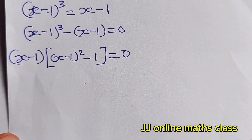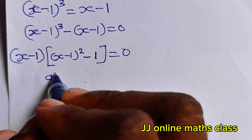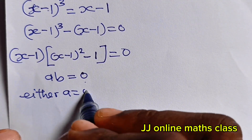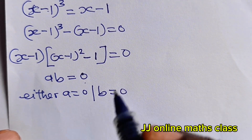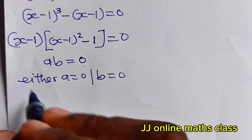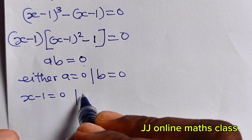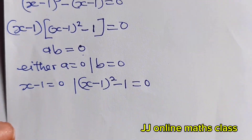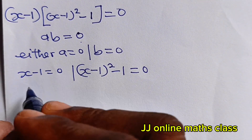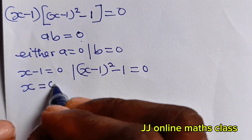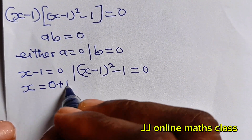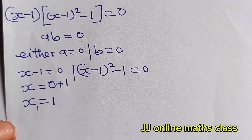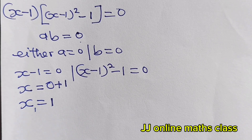Remember: when a multiplied by b equals 0, either a equals 0 or b equals 0. So from here we can say x minus 1 equals 0, or (x-1)² minus 1 equals 0. From the first part, x minus 1 equals 0 means x equals 1. That is the first value of x.